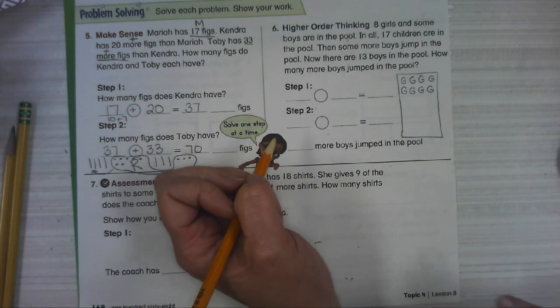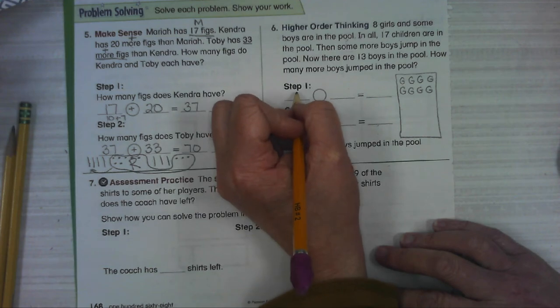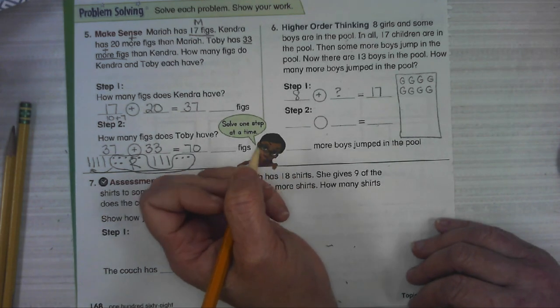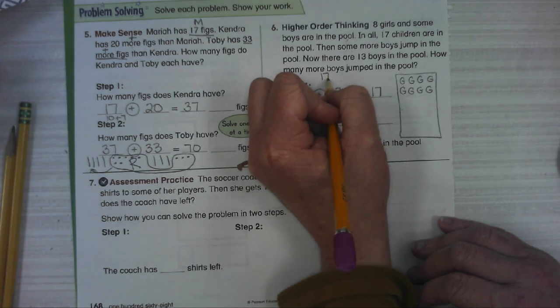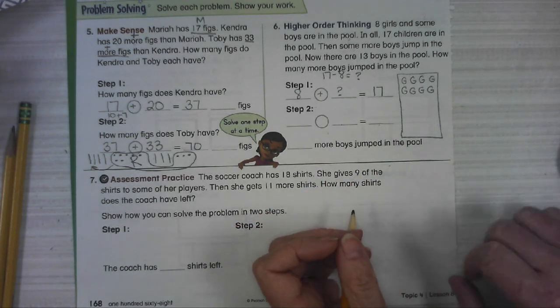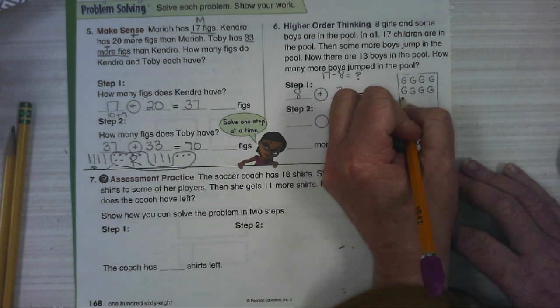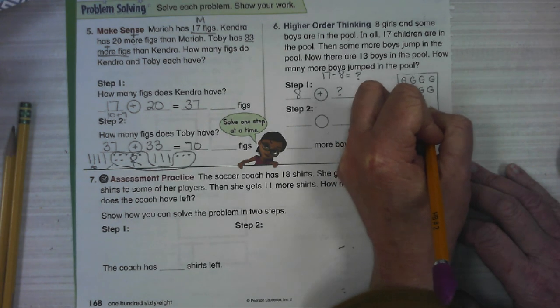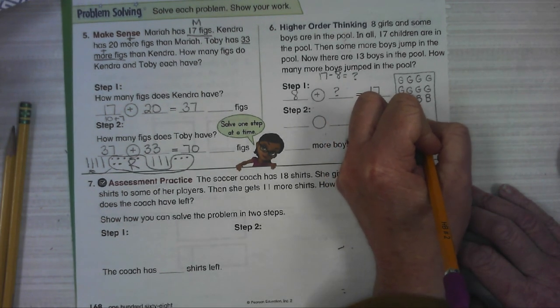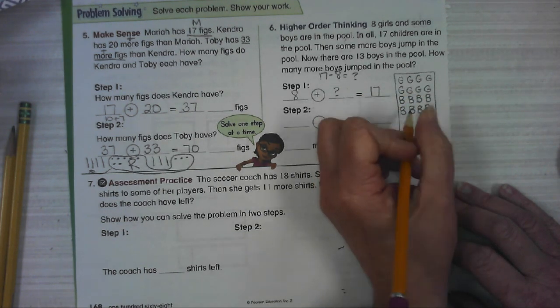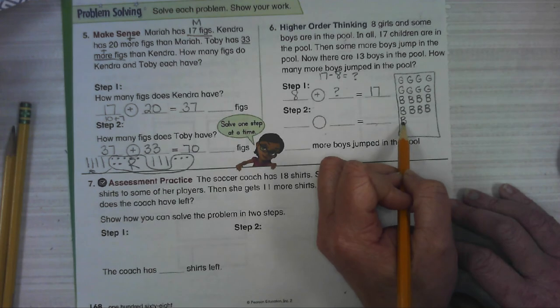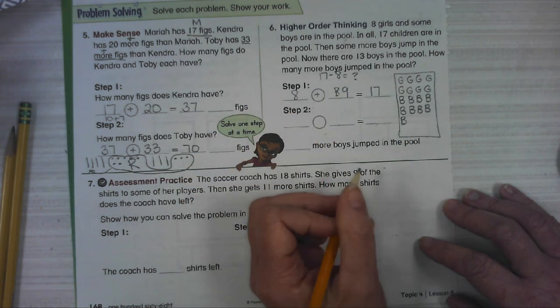In all, 17 children are in the pool. So our equation is eight plus something equals 17. And I hope that you remember from fact families that we can rearrange this and use the equation 17 minus eight and figure out what that is. We can also keep adding boys until we get to 17. So we're at eight. So let's do B for boy. That's nine, 10, 11, 12. So now right now there's 12 kids in the pool. 13, 14, 15, 16, 17 kids in the pool. Let's see how many boys we have. One, two, three, four, five, six, seven, eight, nine. So there's nine boys in the pool.